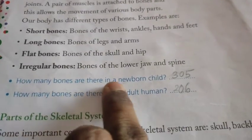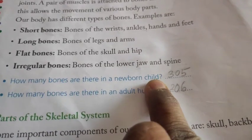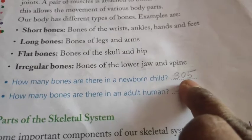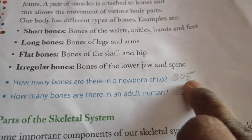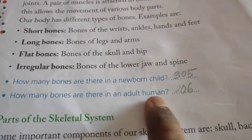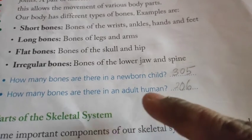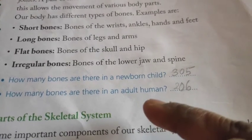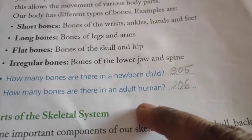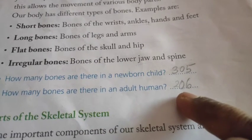How many bones are there in a newborn child? How many bones are there in an adult human? An adult human has 206 bones.